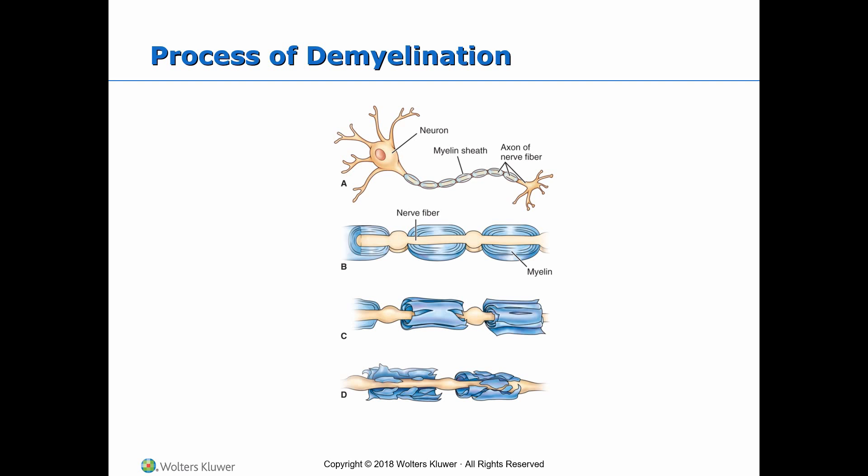Other areas most affected include the cerebrum, brainstem, and cerebellum, and the spinal cord. Degeneration of the axons results in permanent and irreversible damage.